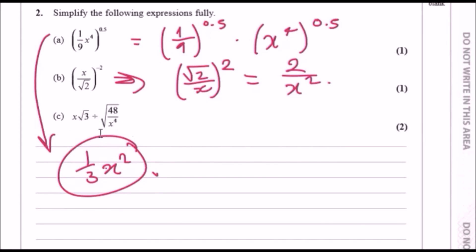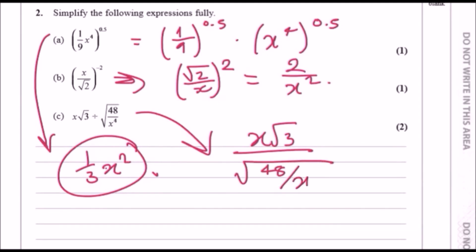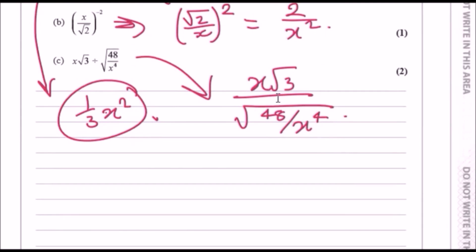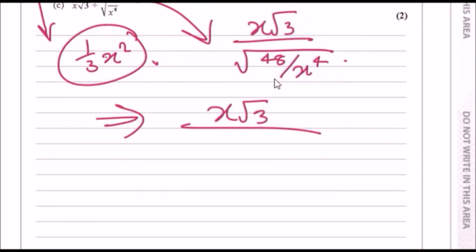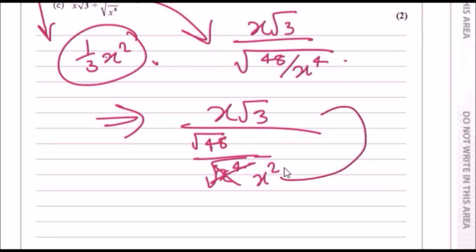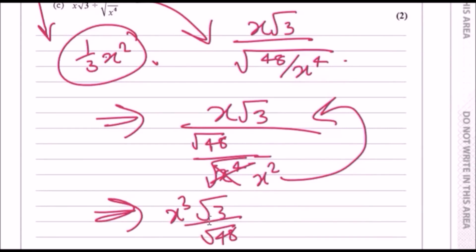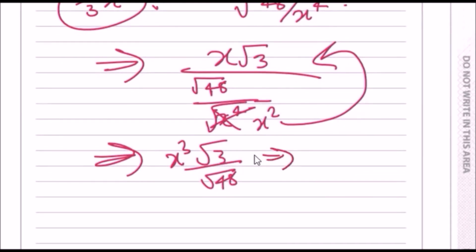For part c, write the division as a fraction: x root 3 over (root 48 over x to the power 4). Partition the roots — on the top we have x root 3, on the bottom root 48 over root(x to the power 4). The square root of x to the power 4 is x squared (power of a half times 4). Since it's on the bottom it moves to the top, giving x cubed times root 3 over root 48. Putting root 3 over root 48 into a calculator gives one quarter, so the answer is one quarter x cubed.